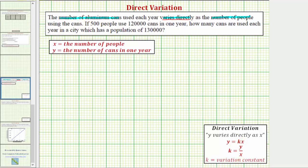Again, because we know we have direct variation, we can model the relationship between the number of aluminum cans and the number of people using the equation y equals kx, where again, because the number of aluminum cans varies directly as the number of people, y is equal to the number of aluminum cans and x is equal to the number of people.